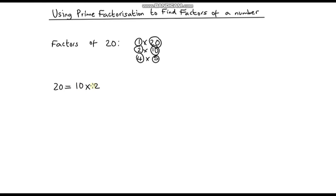Now 10 is not prime, but 2 is prime. So I can break down 10 even further — 10 is the same as 5 times 2, so it's 5 times 2 times 2. Now we are done. We have fully broken 20 down into the product of its prime factors: 5 is prime and 2 is prime. So how does this help us?